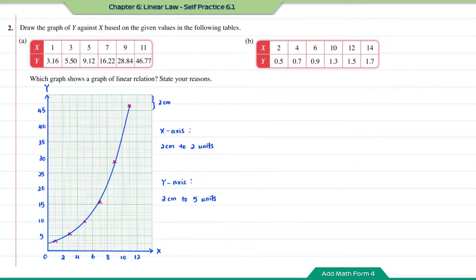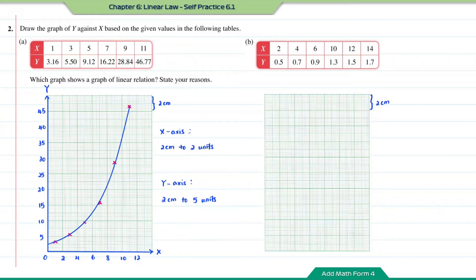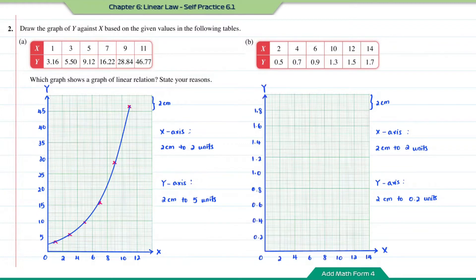Next, we're going to plot graph B. For the y-axis, I'm going to use 2 cm to 2 units, and for the x-axis, 2 cm to 0.2 units. Now let us plot the points based on the values given in the table for question B. After connecting all the dots in question B, a straight line graph is obtained. Therefore, the graph in B is a graph of linear relations.